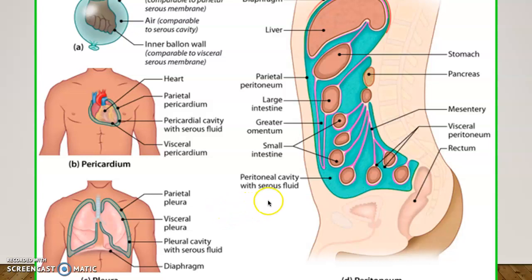With the lungs we have the same situation — the membrane closest to the lungs is called the visceral pleura, and the one on the outside is the parietal pleura. There's actually a small potential cavity between these two layers where serous fluid is located.